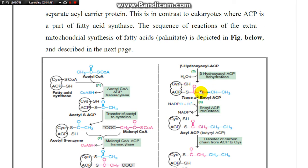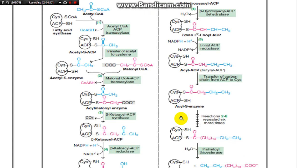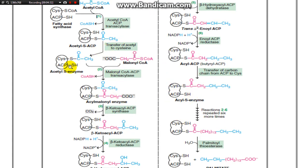This creates a double bond between the alpha and beta carbons, giving trans-enoyl ACP. Enoyl ACP reductase reduces this compound to give acyl ACP or butyryl ACP. The carbon chain is then transferred from the ACP back to the cysteine residue, and the cycle repeats.